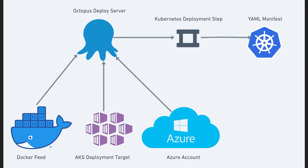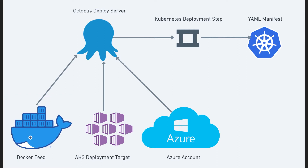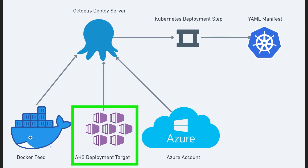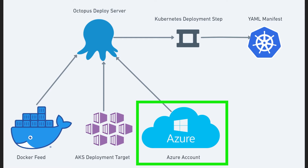Before jumping right into the demo, let's take a look at an architecture diagram of essentially what we'll be doing in this video. We're gonna have our Octopus Deploy server, and to be able to use the Kubernetes step to deploy our Docker image, we're gonna need a few things. The first is the Docker feed — the Docker feed allows us to pull a Docker image directly from Docker Hub, and this can be a private registry or a public registry. And then we're gonna have an AKS deployment target. That deployment target can actually be any Kubernetes cluster in AWS, in Google Cloud, even a raw Kubernetes cluster running on a bare metal server. But in this case, we're gonna be using AKS. And then finally, we're gonna need a way to authenticate to Azure, and we're gonna be using an Azure account set up in Octopus Deploy.